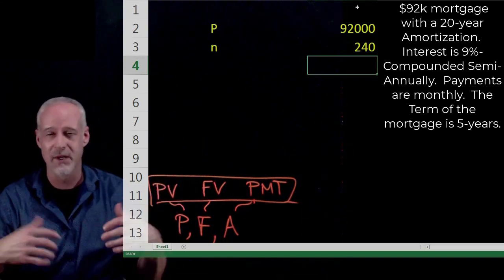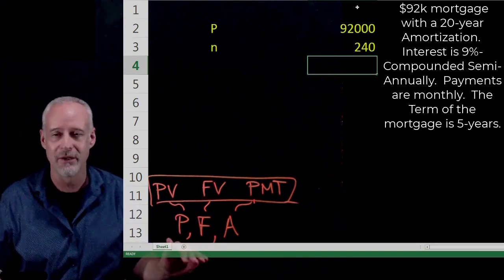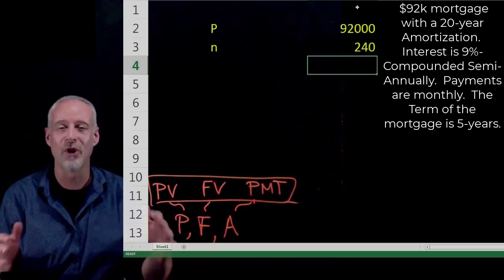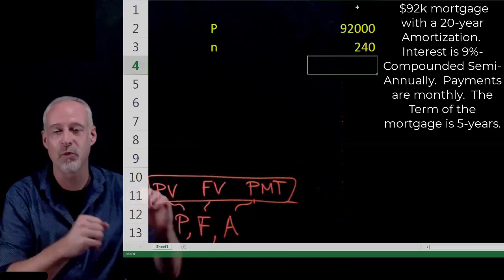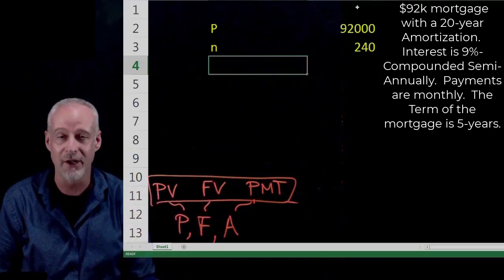And remember, the person who asked, yeah, but what about the term of five years? Term of five years doesn't matter. That's just for how long these payments will be in place. And at the end of five years, you have to go back and negotiate another interest rate.